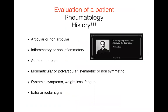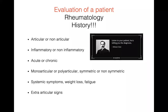The first thing you do is take a history. As William Osler said, listen to your patient — he is telling you the diagnosis. When someone comes in with joint pain, decide: is it the joint or not the joint? Is it inflammatory or non-inflammatory? Is it acute or chronic? Is it monoarticular, polyarticular, symmetric or non-symmetric? Consider systemic symptoms — weight loss, fatigue — and extra-articular signs. Even if someone comes in with just knee pain, it's extremely important to ask about systemic symptoms.